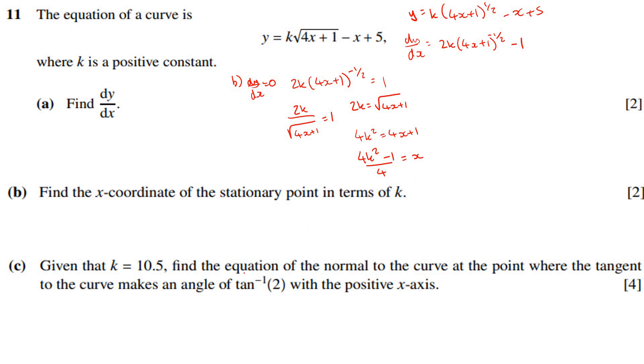All right, given that k equals 10.5, find the equation of the normal to the curve at the point where the tangent to the curve makes an angle of tan inverse of 2 with the positive x-axis. So the tangent will be some triangle that heads off in that sort of direction. So we're saying that its rise over run would be 2. Its rise over run could be found, and you'd find out that its gradient would be making an angle of inverse tan of 2.